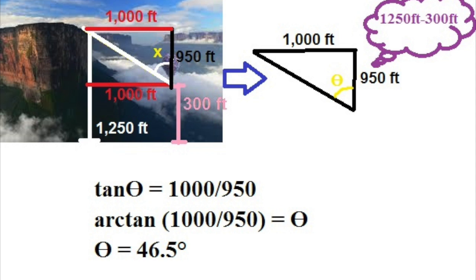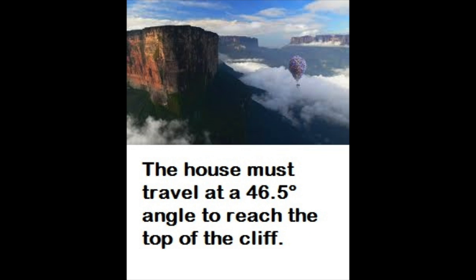Now, to solve for the angle of this triangle, you will have to use tangent of θ equals 1000 divided by 950. To find the measure of the angle, you will have to use arctan or inverse tan of 1000 divided by 950. Once plugged into the calculator, you will find that the angle equals to 46.5 degrees. So the house must travel at a 46.5 degree angle to reach the top of the cliff.